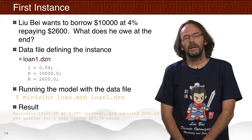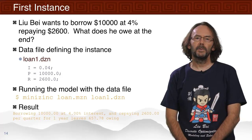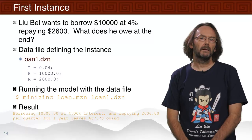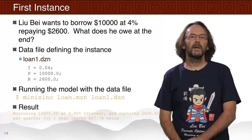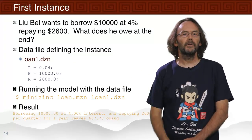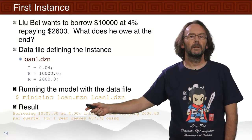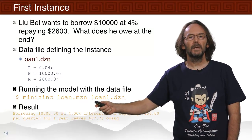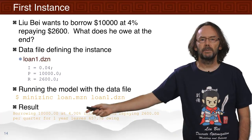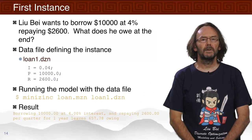Now let's ask some questions of this model. If Liu Bei wants to borrow $10,000 at 4% interest, repaying $2,600 every quarter, how much does he owe at the end? We provide a data file defining the interest rate as 4%, the principal as $10,000, and the repayment as $2,600. Running 'minizinc loan.mzn loan1.dzn', we get the result that at the end he owes $657.78.